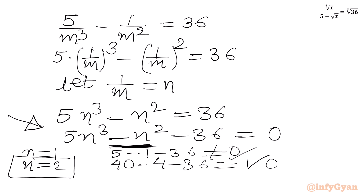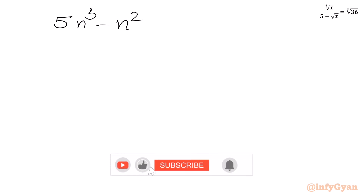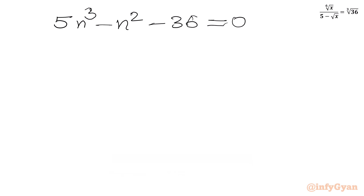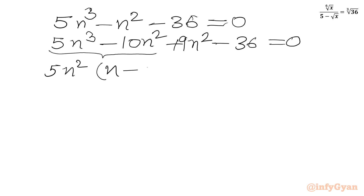So I can write 5n³ minus n² minus 36 equal to 0. I will split the middle term minus n² as minus 10n² plus 9n². Since n=2 is a root, I take 5n² common from the first two terms to get 5n²(n minus 2).